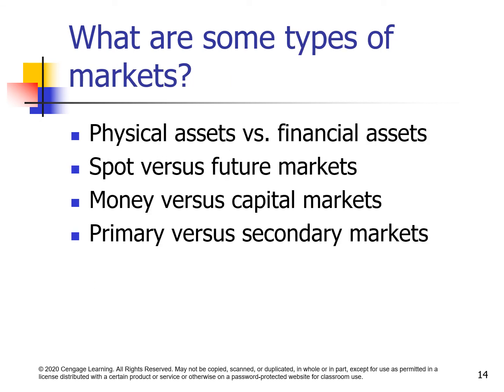What are some types of markets? Markets can be classified into different types by their assets. For example, physical assets versus financial assets, spot market versus futures market, money market versus capital markets, and primary market versus secondary markets.